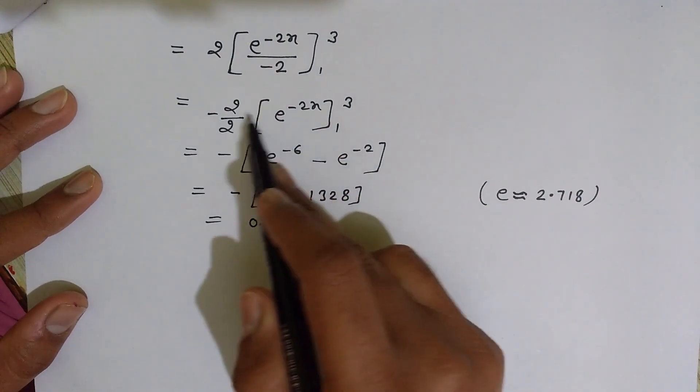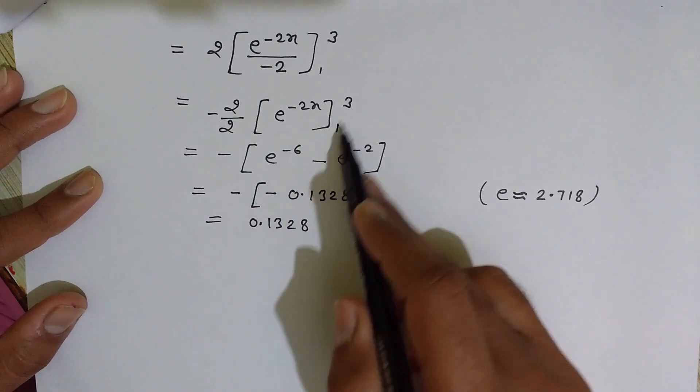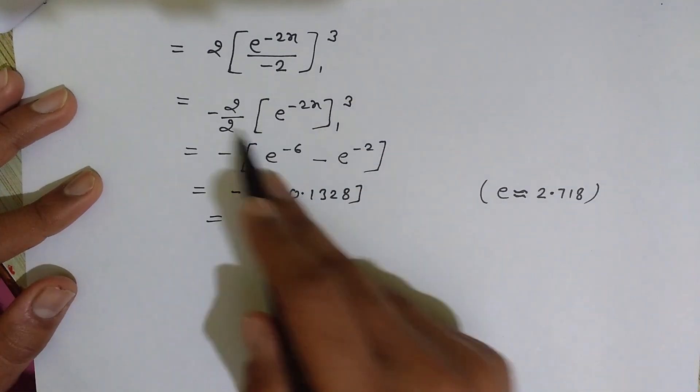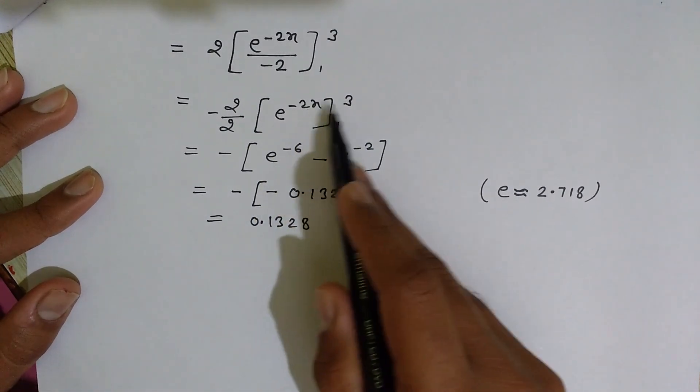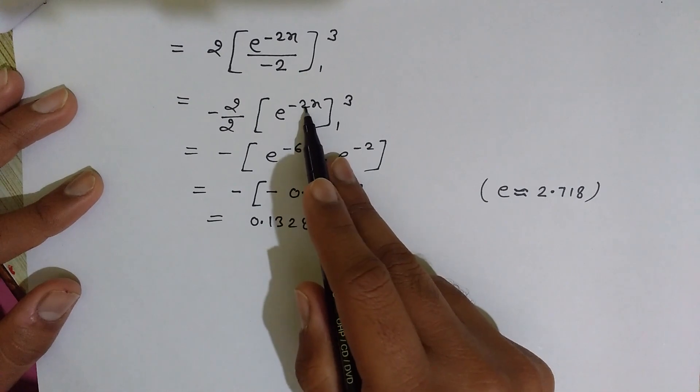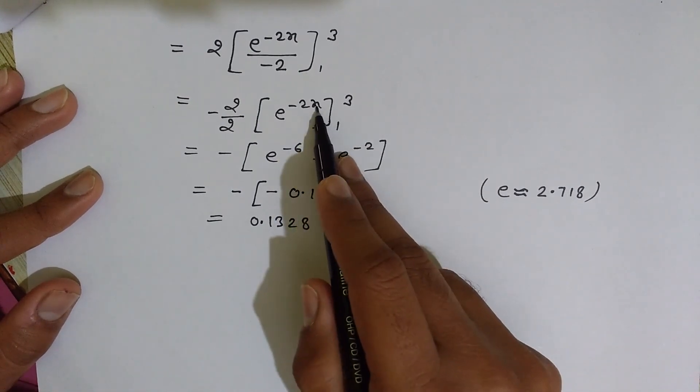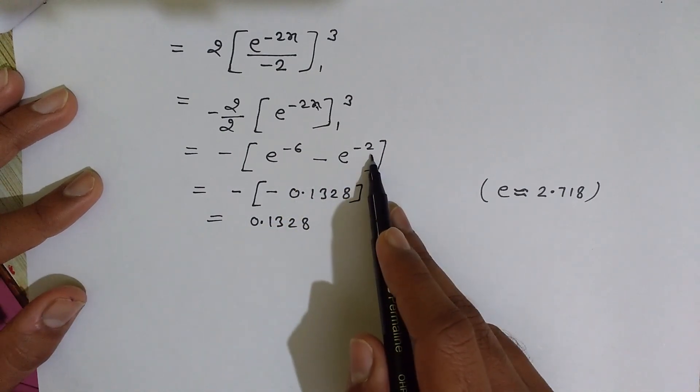On solving this, take the 2 out—minus 2 by 2 becomes minus 1—and e^(-2x) limits 1 to 3. Now you can easily solve it: upper limit minus lower limit. e^(-2×3) minus e^(-2×1), so e^(-6) minus e^(-2).